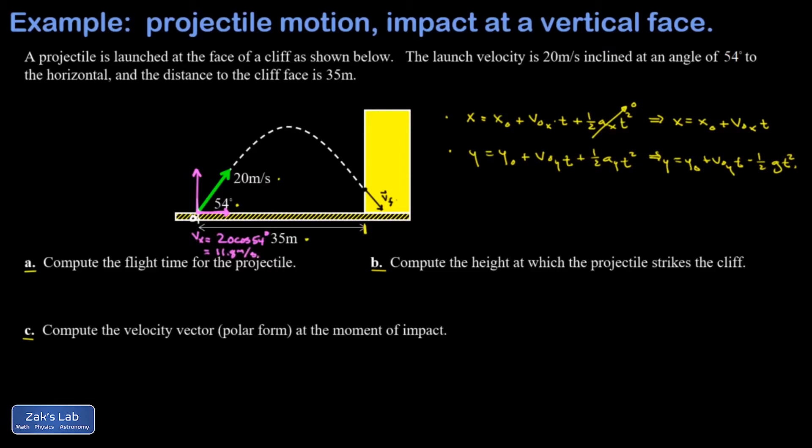This y component—I really just translated it over here from being the vertical leg of a right triangle—that's going to be 20 sine 54. So vy equals 20 sine 54. Into three sig figs, that's 16.2 meters per second.